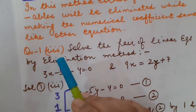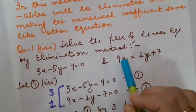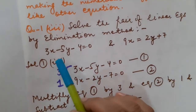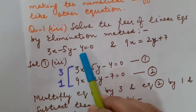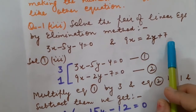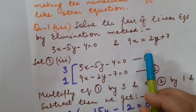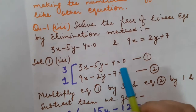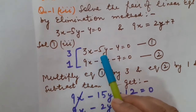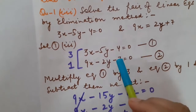The questions are from Exercise 3.4. This is question number 1, third part. Solve the pair of linear equations by Elimination Method. The pair given is: 3x minus 5y minus 4 is equal to 0, and 9x is equal to 2y plus 7. First of all, I am going to write both equations in generalized form: a1x plus b1y plus c1 equals 0. So I have written: 3x minus 5y minus 4 equals 0, and 9x minus 2y minus 7 equals 0.